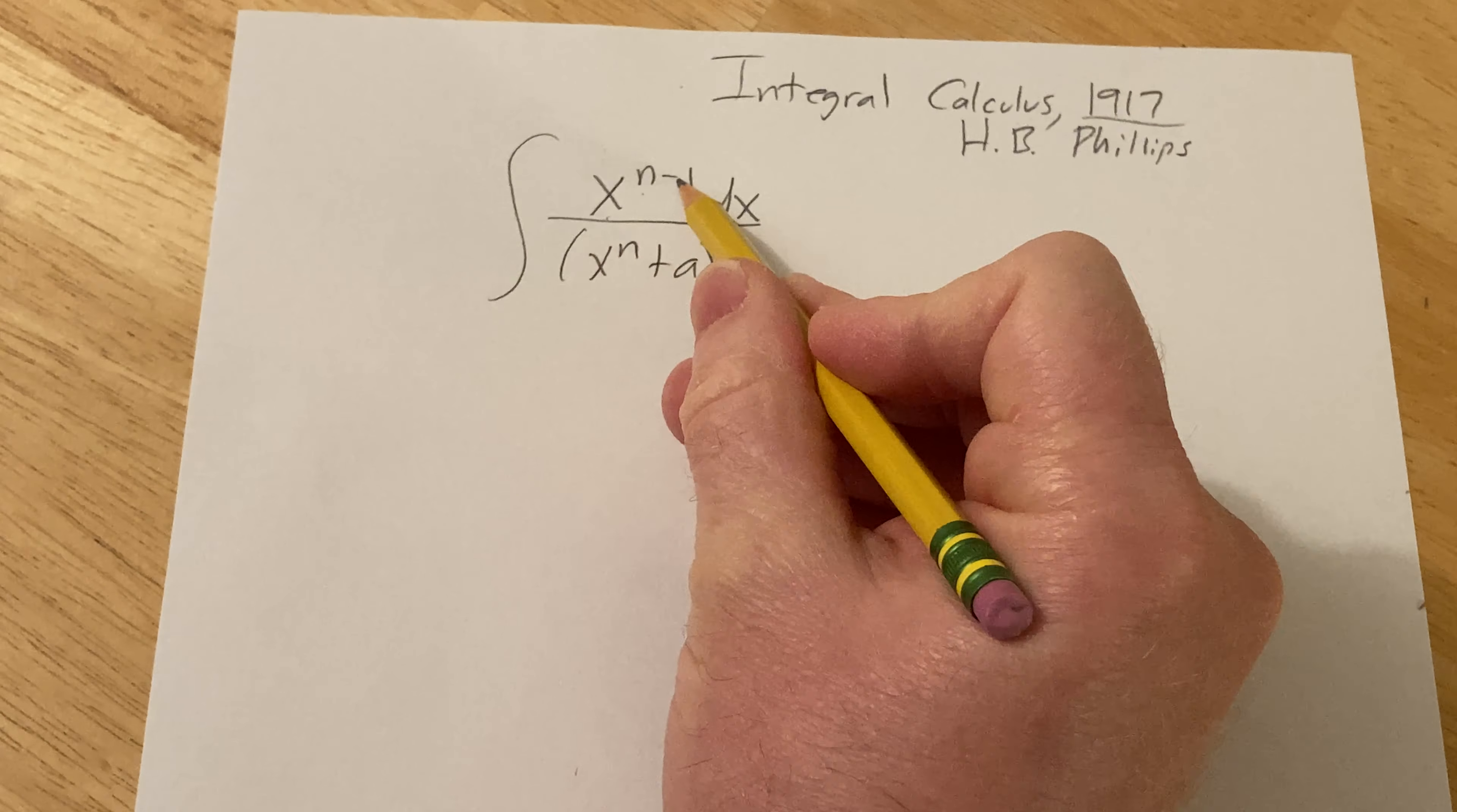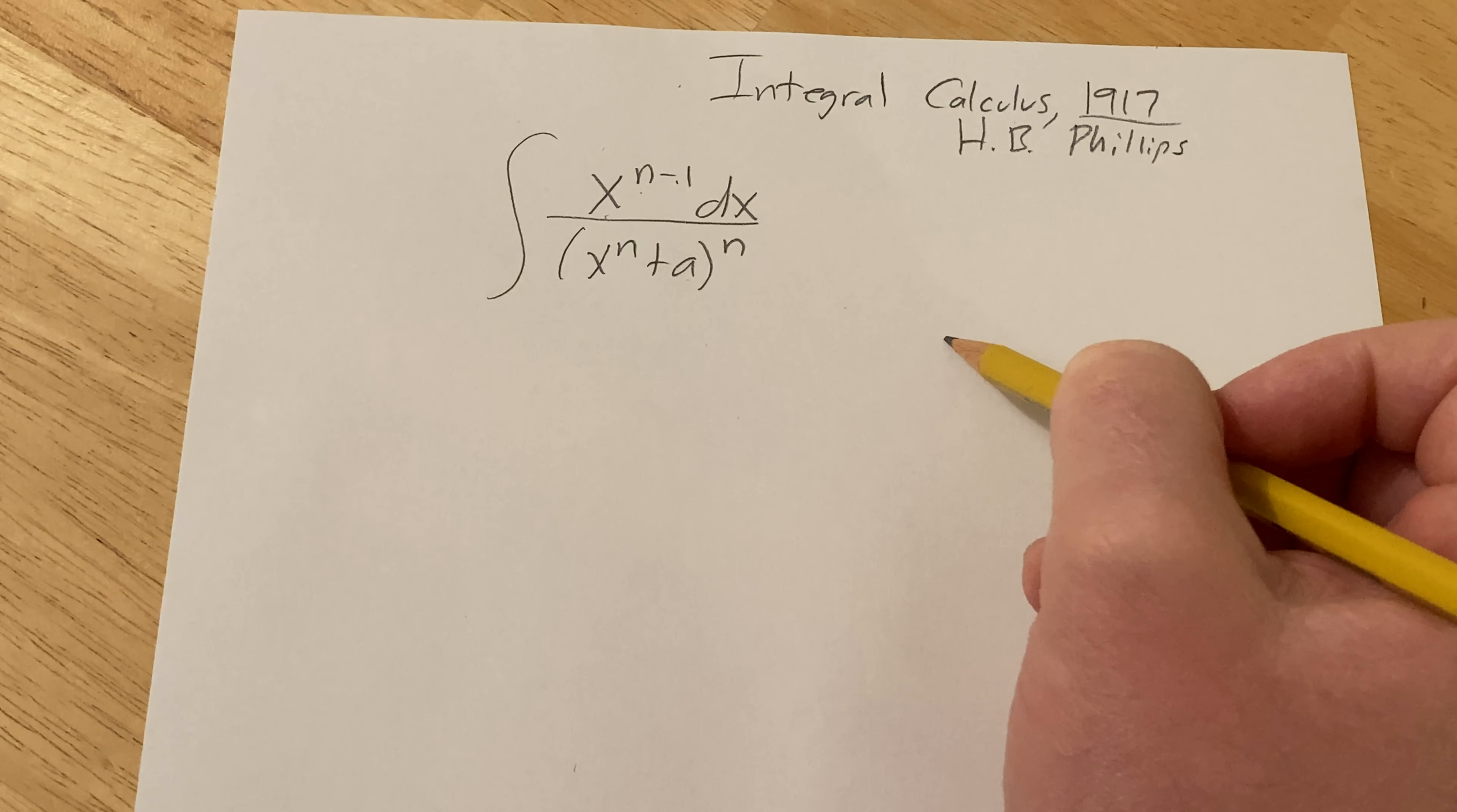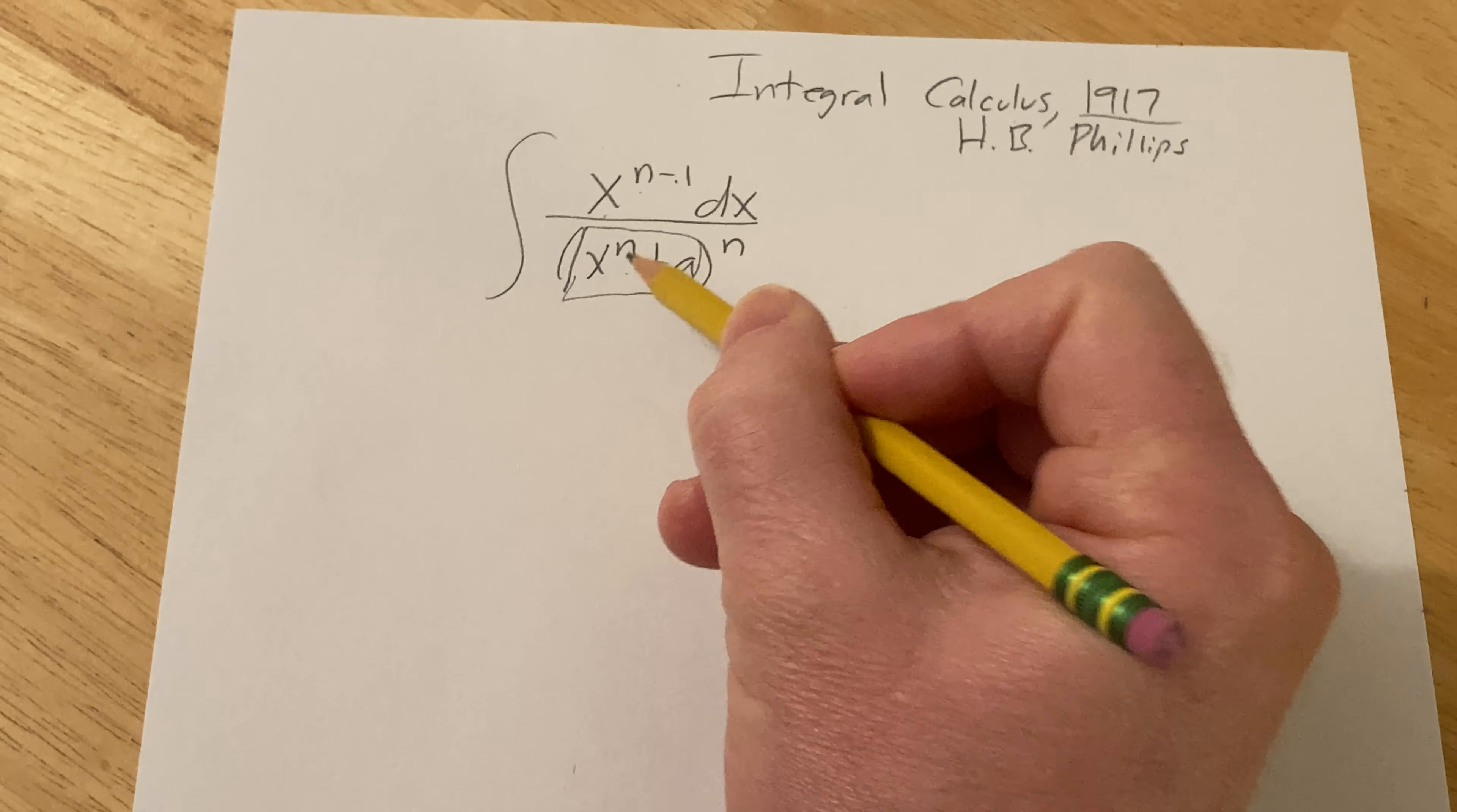So we have x to the n minus 1 dx over x to the n plus a to the nth power and we have to integrate this. I think it looks a lot harder than it is. Let's try to do this by letting u be what's here.